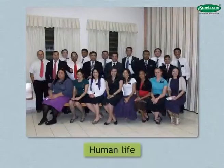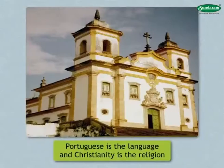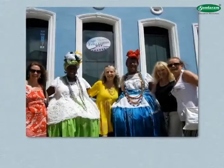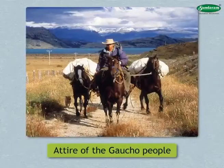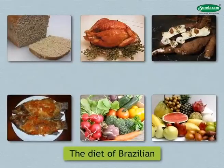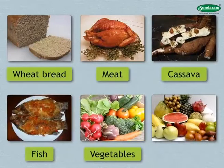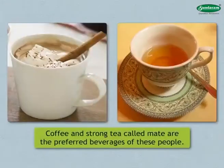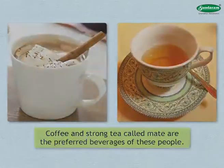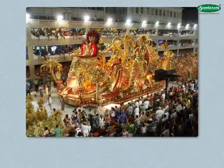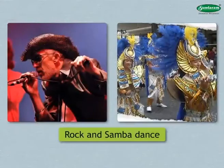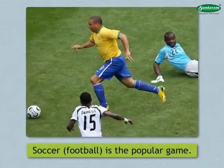Portuguese is the language and Christianity is the religion of the people. Ladies wear colorful long skirts and blouses, while men wear shirts and trousers. The gaucho people engaged in animal rearing wear a poncho, baggy trousers, and a hat. The average Brazilian diet includes wheat bread, meat, cassava, fish, vegetables, and fruits. Coffee and strong tea called mate are preferred beverages. Carnival is the popular festival, featuring processions with decorative floats, rock and samba dance, and music. Soccer is the popular sport.